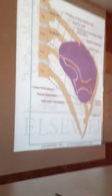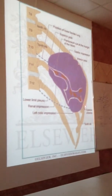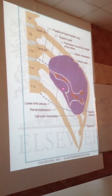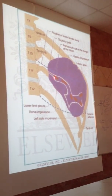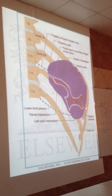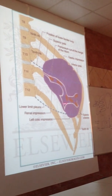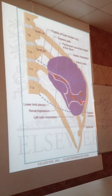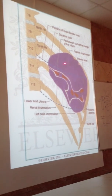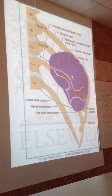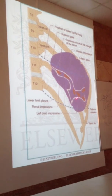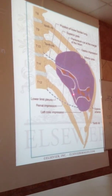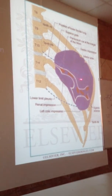Its length is 12 centimeters and it is about 7 centimeters in breadth. It is completely and entirely surrounded by peritoneum, making it a peritoneized organ, except for the region of the hilum where the splenic artery enters and the splenic vein leaves.